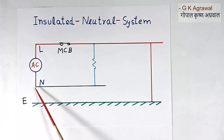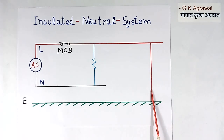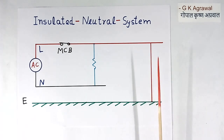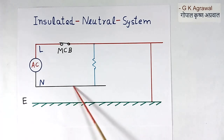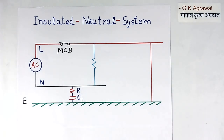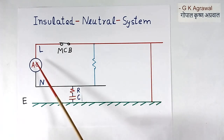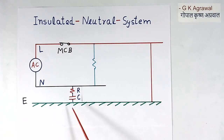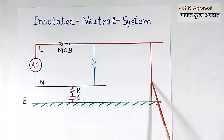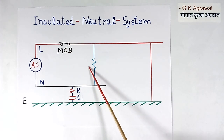In this system, neutral is floating. I have shown a fault here permanently just for explanation — the fault will not be permanent. We connect an RC between neutral and earth. Now neutral is not floating, but the values of R and C are such that the impedance is very high. So in case of a short circuit, current will flow, but very less current will flow because of the high impedance. So the MCB will still not trip, and the load will continue to work.